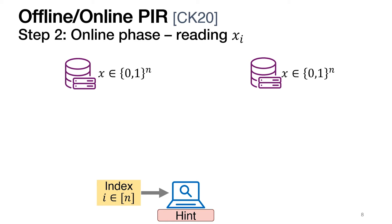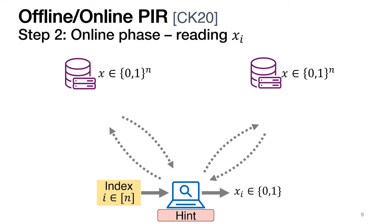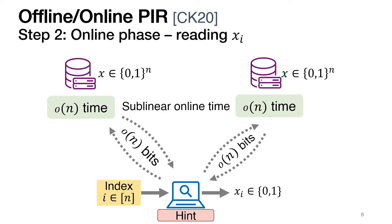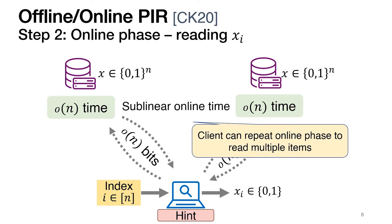Once it gets its input, the client uses the hint to generate its queries to the two servers. From the responses of the two servers, the client can recover the value of its record of interest. Crucially, the communication in the online phase as well as the running time of the two servers are sublinear in the size of the database. Moreover, the online phase can be repeated an unbounded number of times without having to repeat the offline phase, meaning the relatively large cost of the offline phase can be amortized over multiple reads.